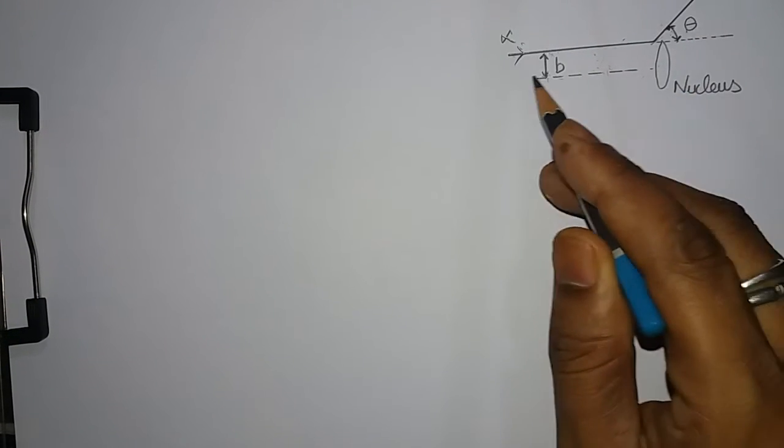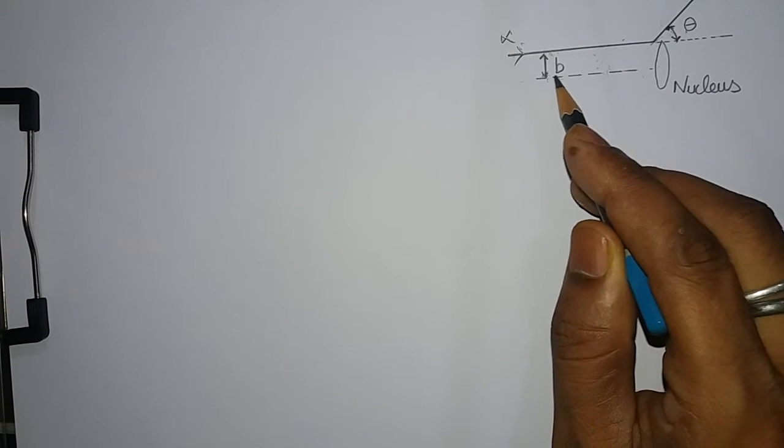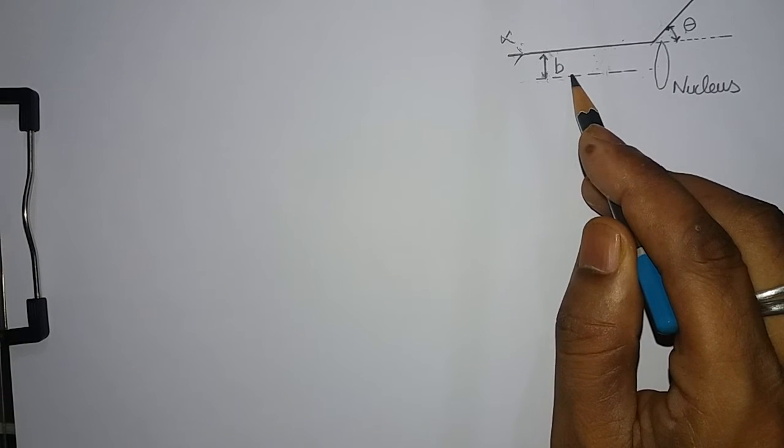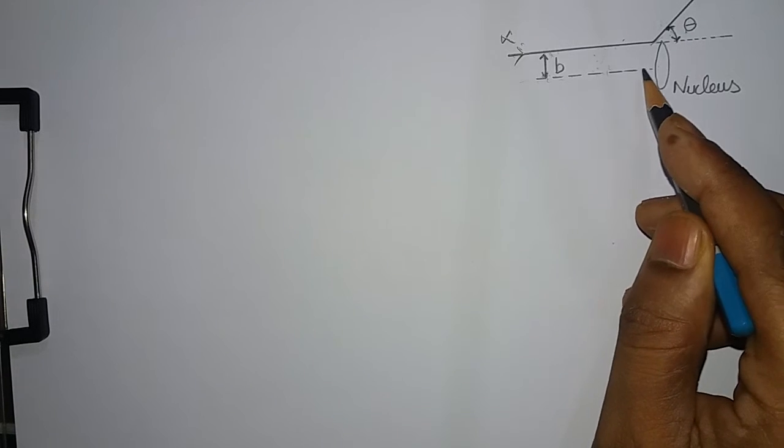For a head-on collision, if this B is zero, then what will happen? The scattering angle will be 180 degrees.